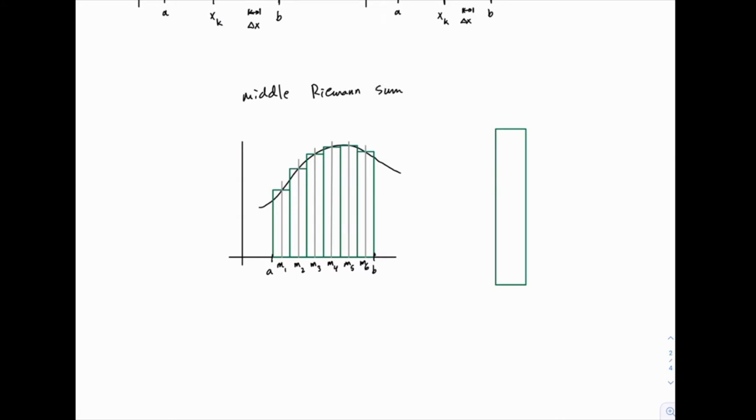So the midpoint rule is very simple. We just use the center of each interval to calculate the height of each rectangle. So each rectangle that we have drawn here in green has a width of delta x.